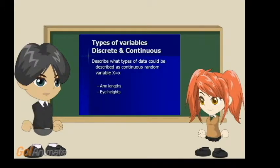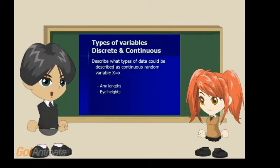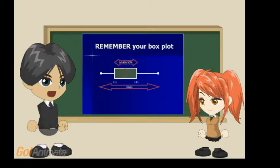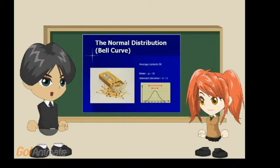There are two types of variables: the discrete variable and the continuous variable. Here is an example of the box plot. I will give you an example.